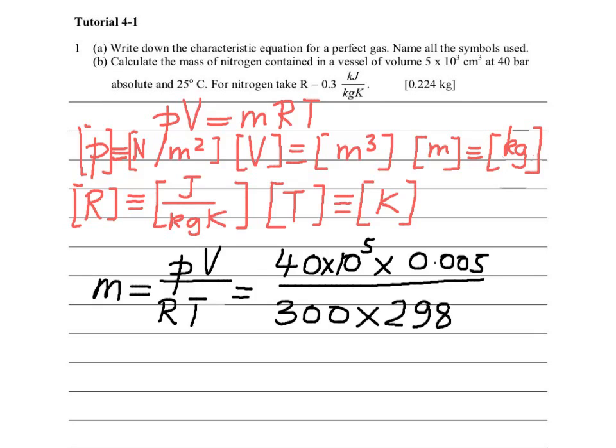Because the temperature given to us is 25 degrees. So 25 plus 273 will give you 298.